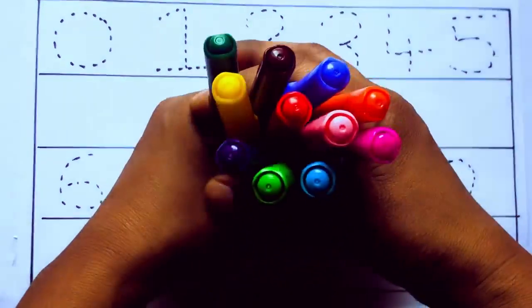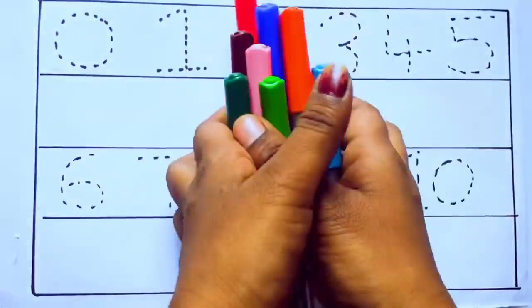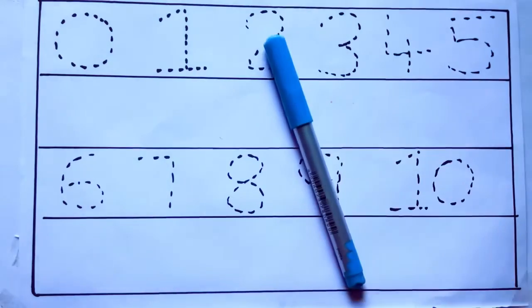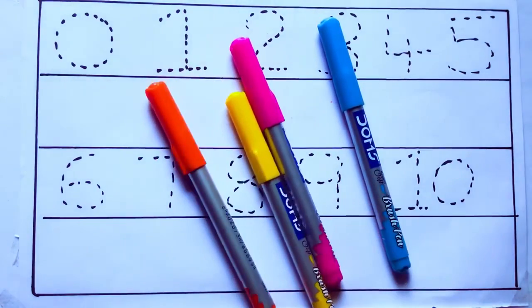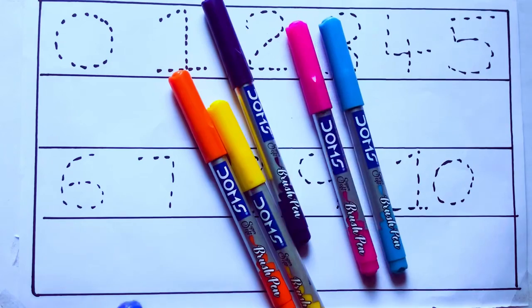Let's learn some colors. These are all the color pencils. Let's learn the names. Sky blue color, pink color, yellow color, orange color, violet color.